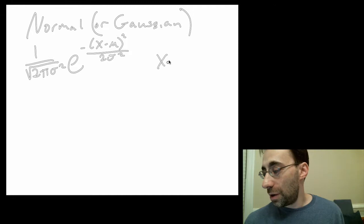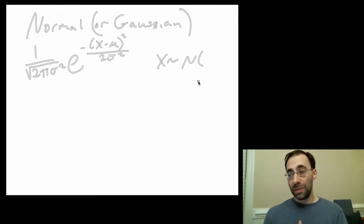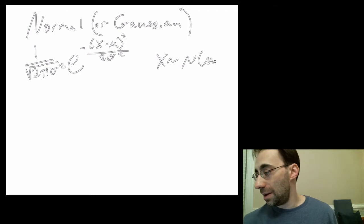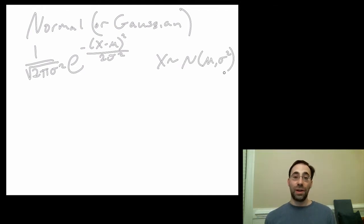So that's the Normal. We often write, if a variable is distributed according to a Normal, we can write x is distributed, that tilde is distributed according to N(mu, sigma squared), that says x is distributed according to a Normal Distribution with a mean, mu, and a variance, sigma squared, again, with a standard deviation, sigma.